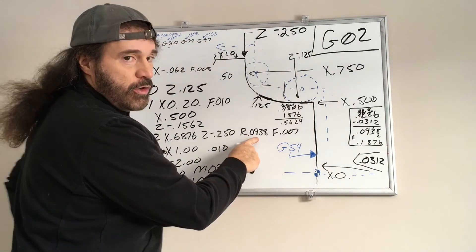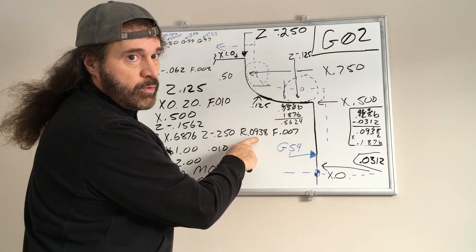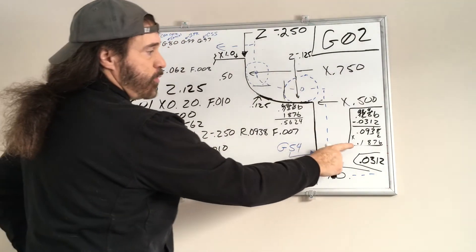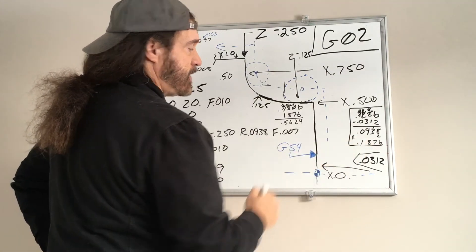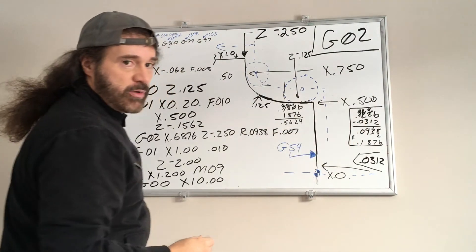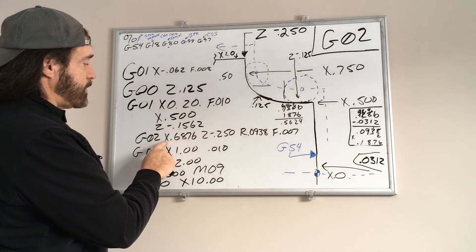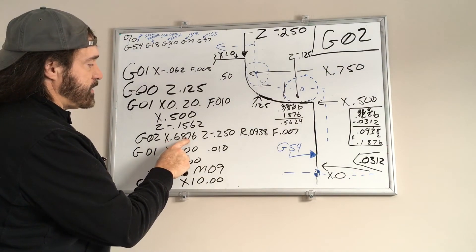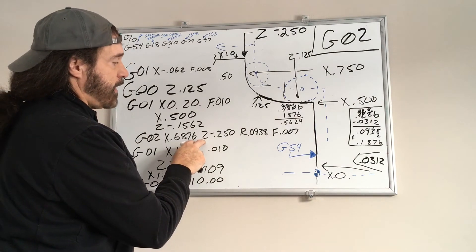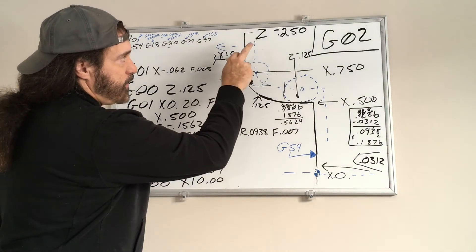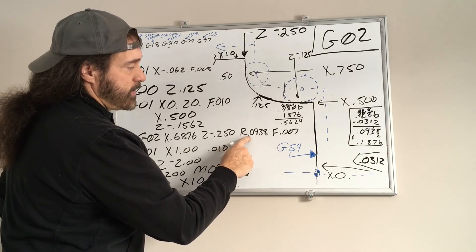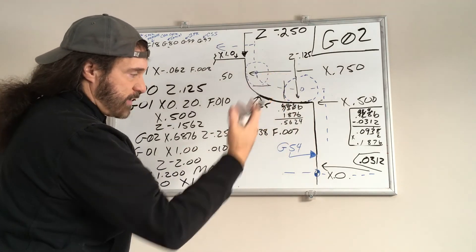You're going to take your new radius value, you're gonna double that, which becomes point one eight seven six. I'm going to add to this X point five, so now it's X point six eight seven six. You're going to keep your Z value as Z negative point two fifty, and your R now is point zero nine three eight, and feed rate point zero seven.